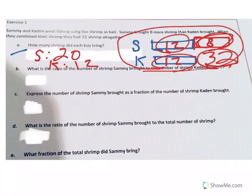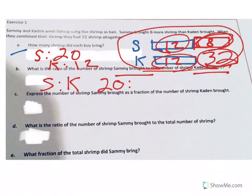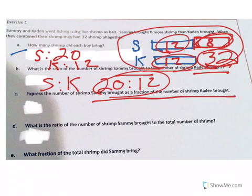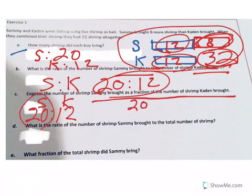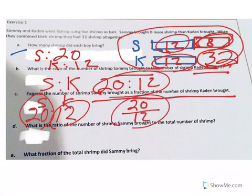Part B, what is the ratio of shrimp Sammy brought to the number of shrimp that Caden brought? Well, we're going Sammy to Caden. Sammy brought 20, Caden brought 12. Ratio is 20 to 12. Express the number of shrimp Sammy brought as a fraction of the shrimp that Caden brought. Well, again, we had 20 to 12, which was Sammy to Caden. If we're going to do it as a fraction, this first number is our numerator, we have 20. Second number here, that is our denominator, 20 twelfths.